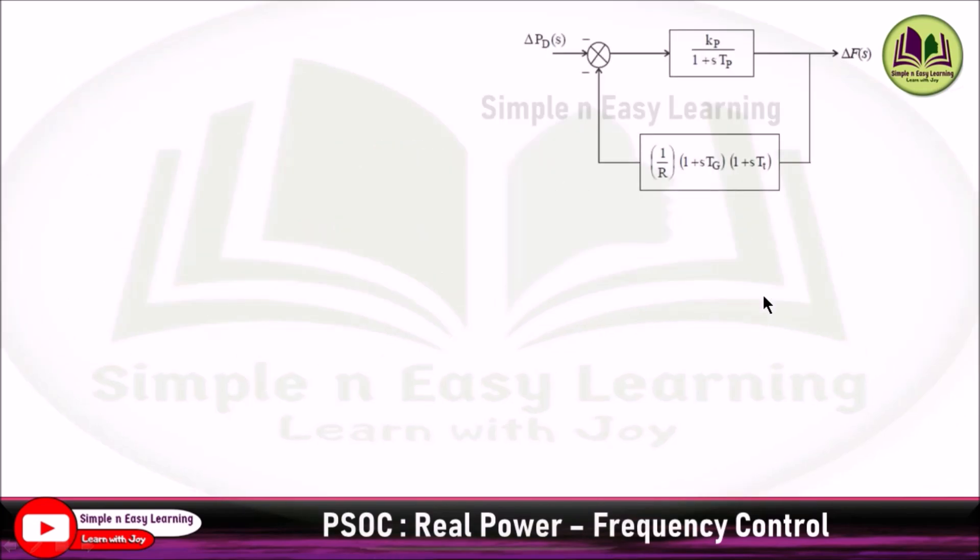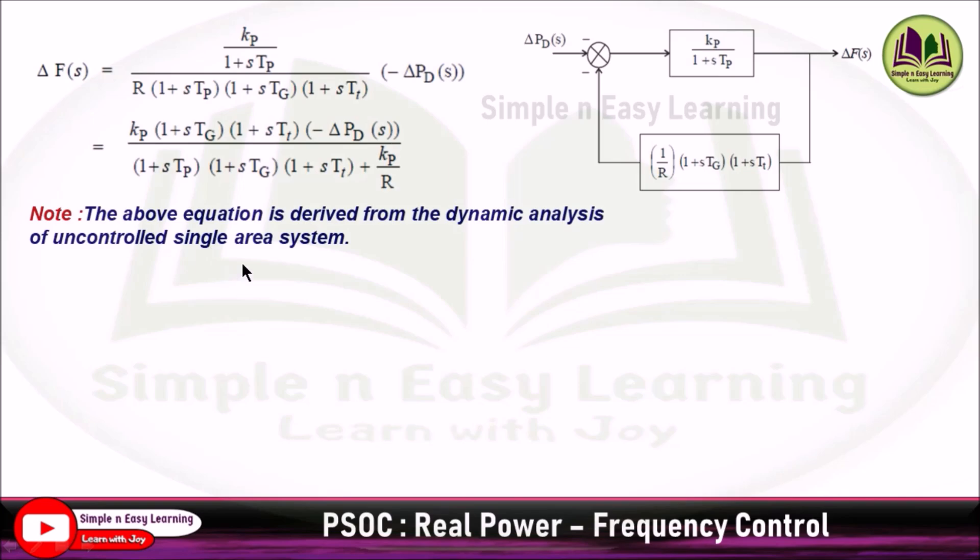Now considering the block diagram, from the dynamic analysis of uncontrolled single area system, Δf(s) equals Kp times (1+sTg) times (1+sTt) minus ΔPd(s), divided by (1+sTp)(1+sTg)(1+sTt) plus Kp/R. This expression we derived directly from the dynamic analysis. We assume Tg and Tt equal to 0, but here the values are specified, so keep the expression as is.